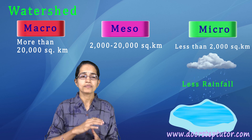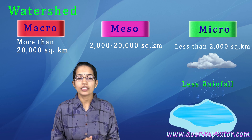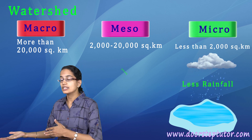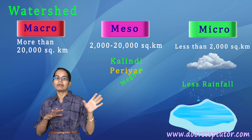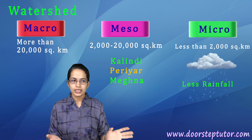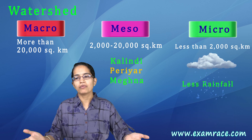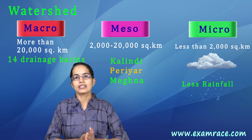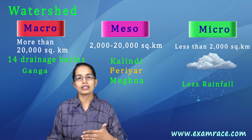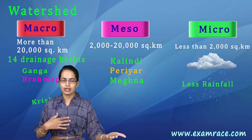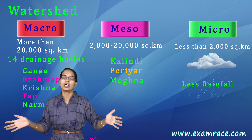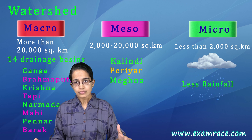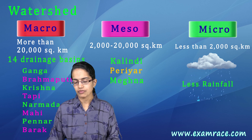Meso watershed examples include rivers like Kalindi and Periyar. Macro watersheds correspond to the 14 major rivers of India — Ganga, Brahmaputra, Krishna, Tapti, Narmada, Mahi, and others. That is the basic classification of watersheds in India.